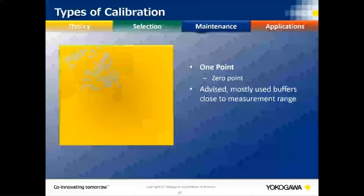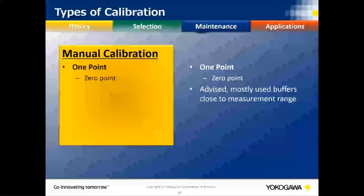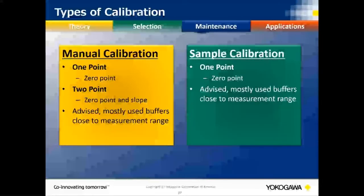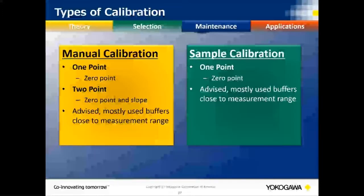There are two types of calibration: manual calibration, either a one-point (zero) or a two-point (zero and slope). Traditionally, because it's just a platinum measuring pen, there's no pH glass aging to compensate for, so we do a one-point manual calibration. You can do a grab sample calibration, but pick a solution close to your process ORP value.